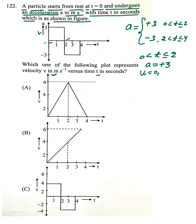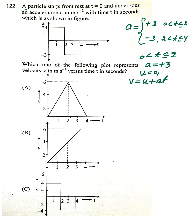Our goal is to plot the velocity versus time graph. Using the equation v = u + at, with initial velocity 0 and a = +3, v is written as 3t. At t = 2 seconds, v = 6 meters per second.